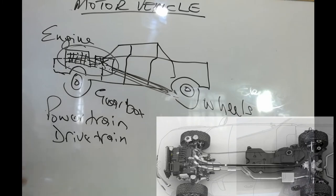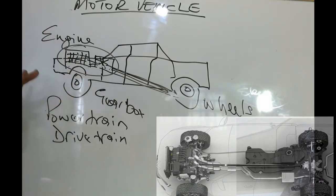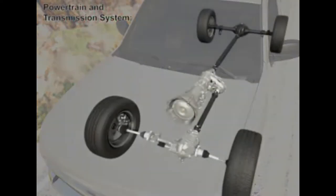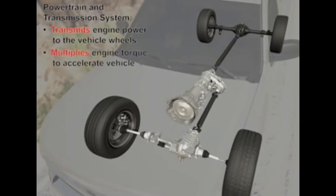In a nutshell, that is how a car is designed to move. The vehicle's power train and transmission system transmits engine power to the vehicle wheels. It provides for multiplication of engine torque or twisting force to accelerate the vehicle from a stop or for carrying heavy loads in the case of trucks. The system also allows for engine speed reduction at cruising speeds to save fuel and reduce noise.